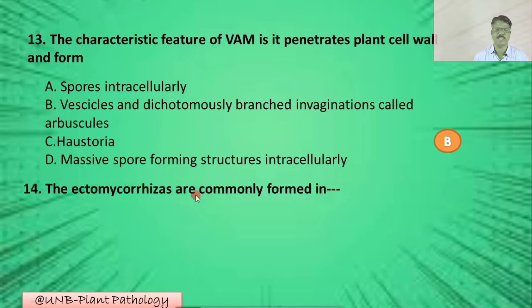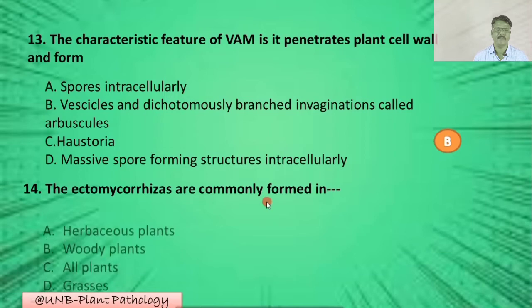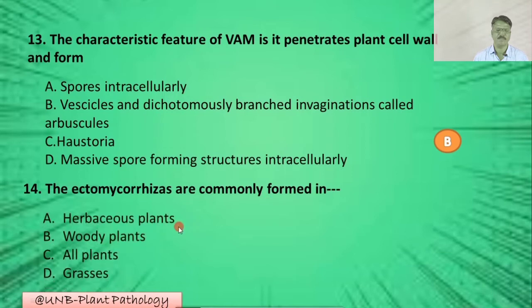Question number fourteen: Ectomycorrhizae are commonly formed in — A: herbaceous plants; B: woody plants; C: all plants; D: grasses. The correct option is C: all plants.